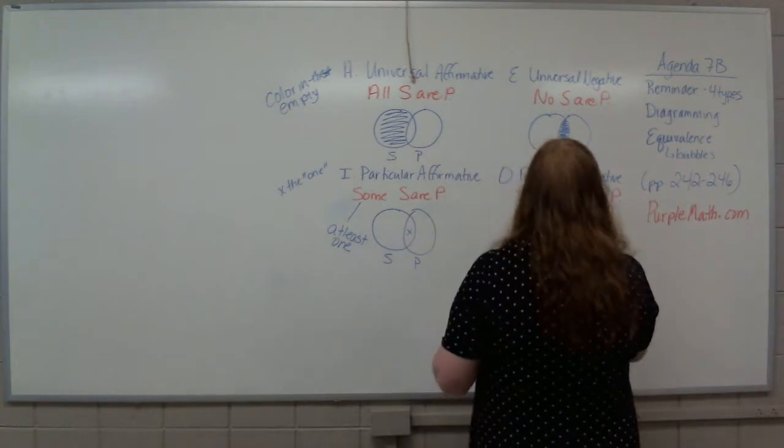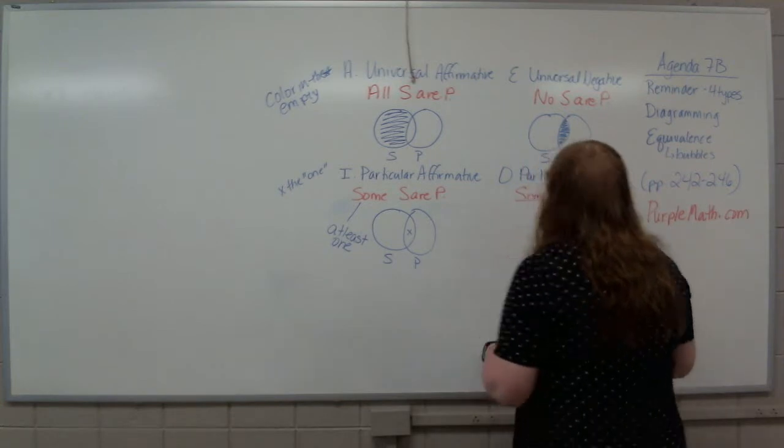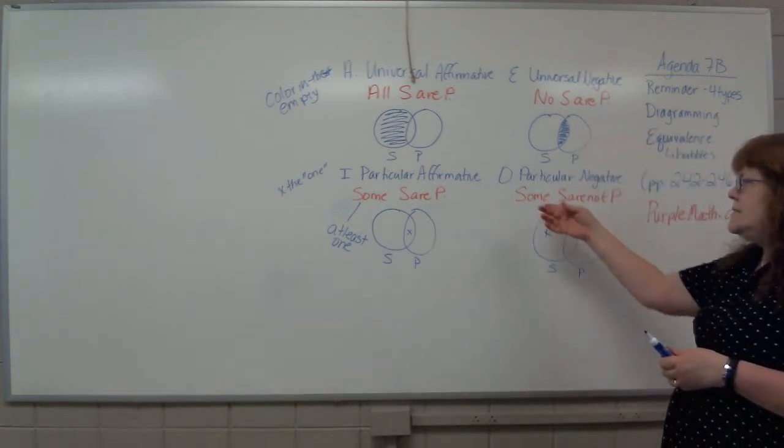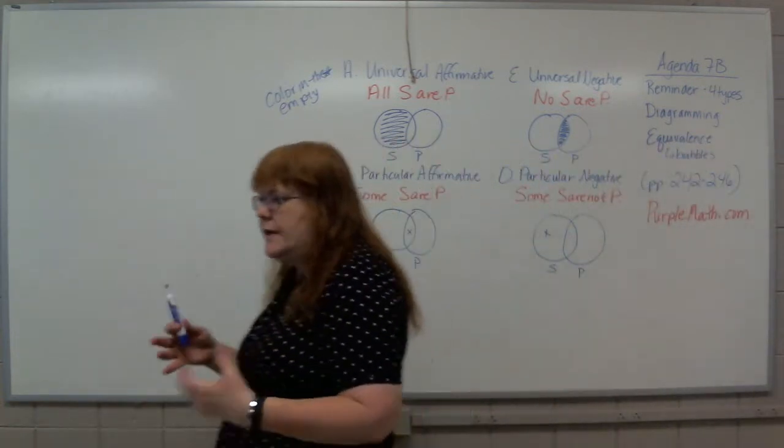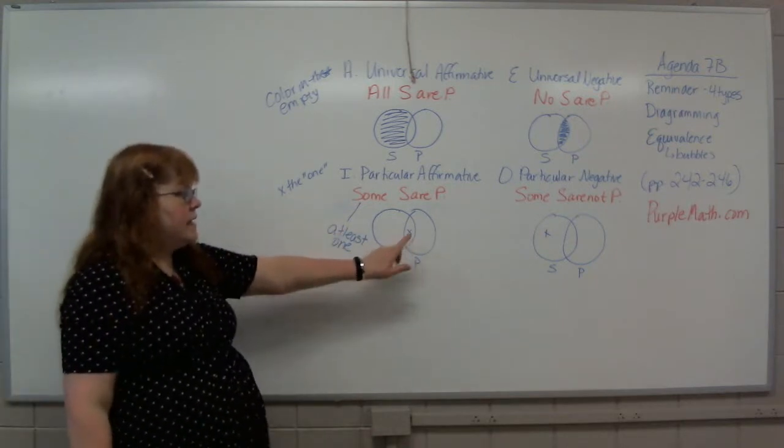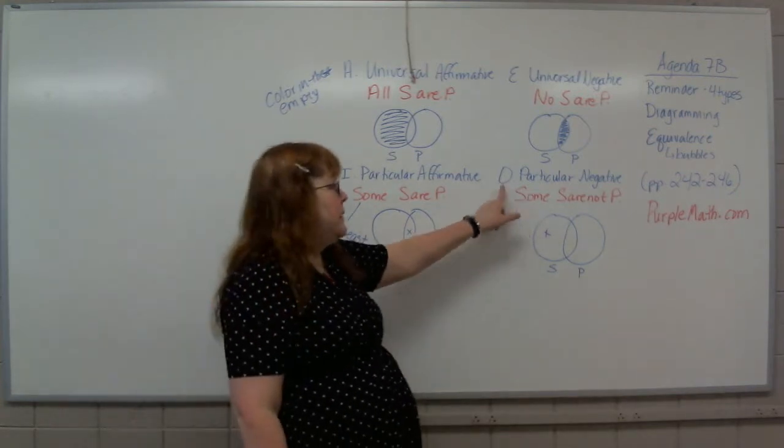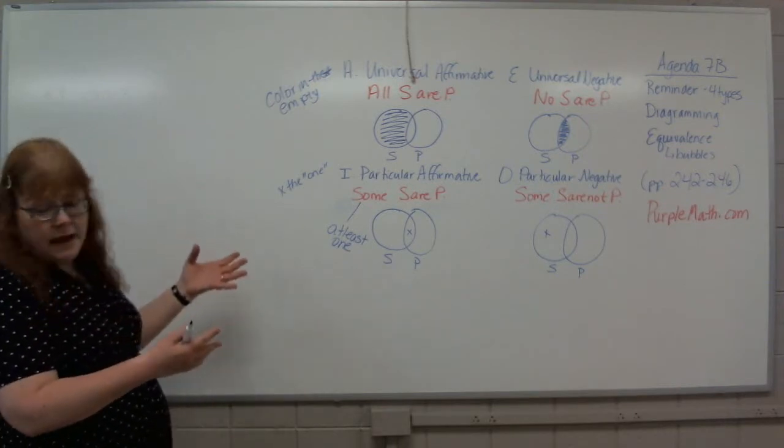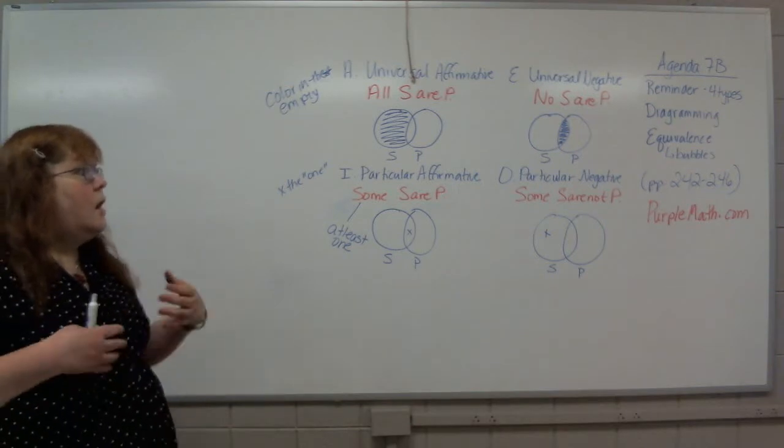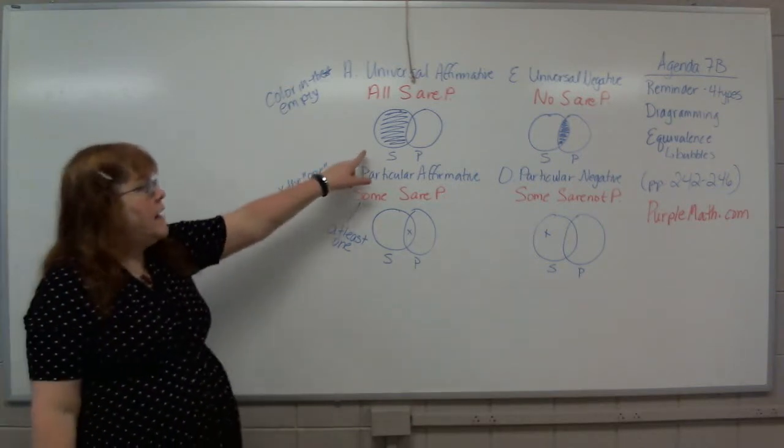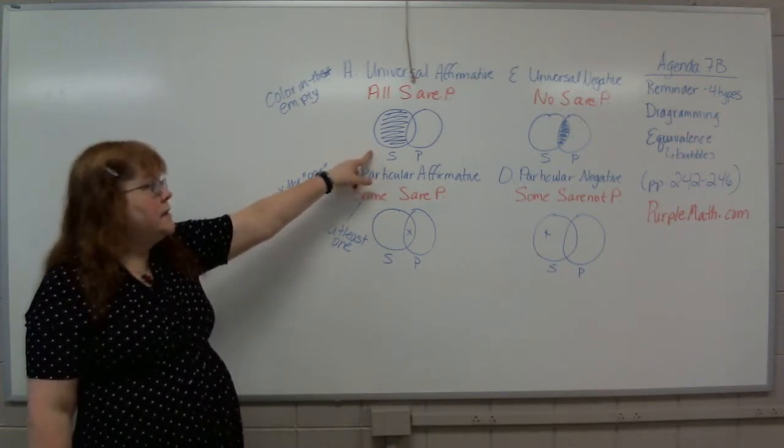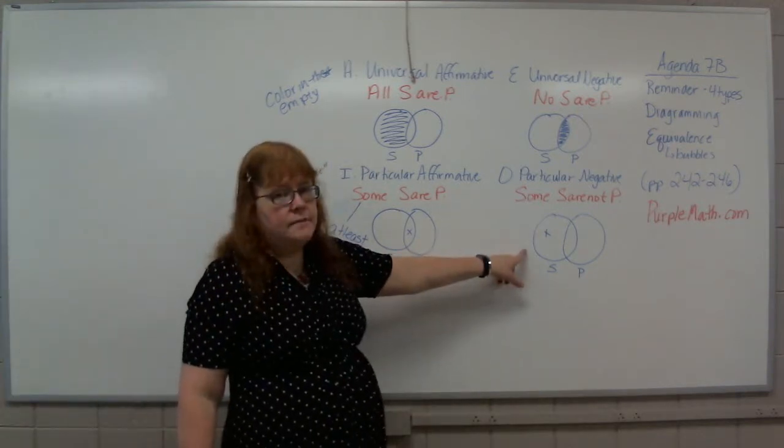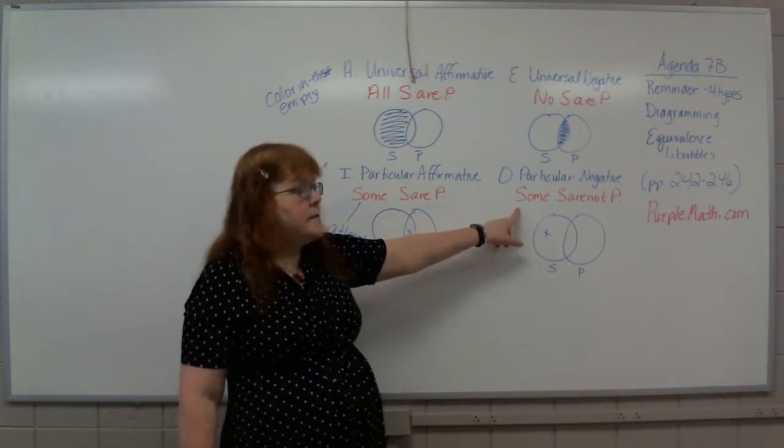I can draw my X anywhere in that eyeball section. Doesn't matter. So the rule for my universal is color in the empty. My rule for the particular is X the one. It's at least one. So we put an X for the one S. We mark the place where there is somebody. Some S are not P. I have at least one sailboat person who does not want to be a paddleboat person. So there's an X out here. Again, some is at least one. And so we have this kind of different way of looking at things. This is just what some S are P looks like. We have an X in the center section, the overlap. Some S are not P, my O sentence, has an X outside of that eyeball section.